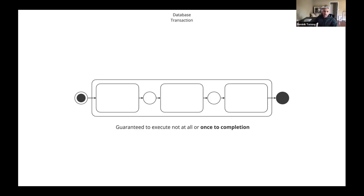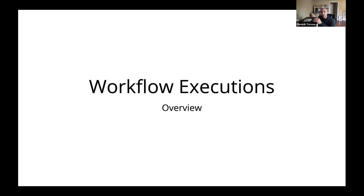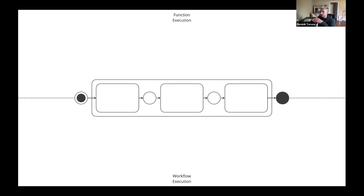Do we have a similar abstraction in the context of distributed systems? Well, now we do. Let's start with the classical function execution. We can argue that a function is the smallest building block we have at our disposal to compose large-scale complex systems.